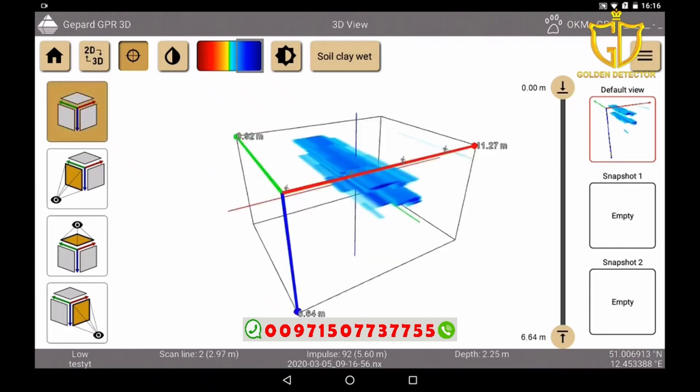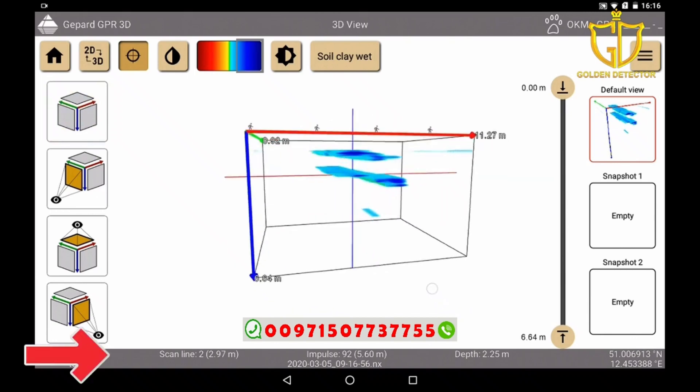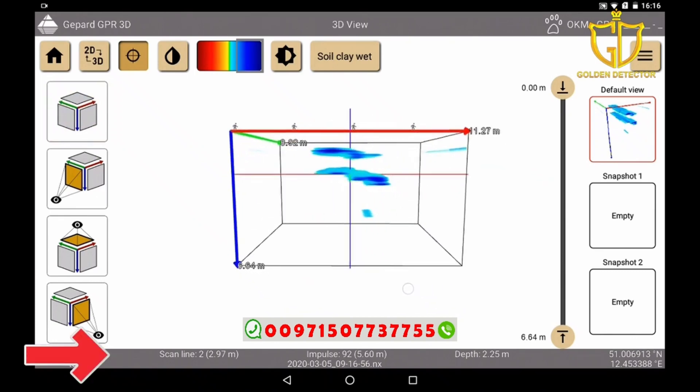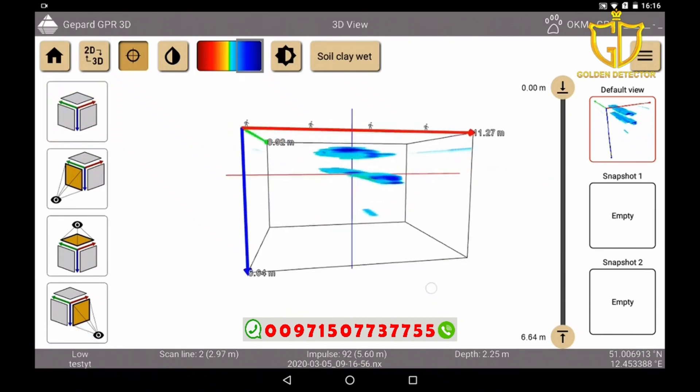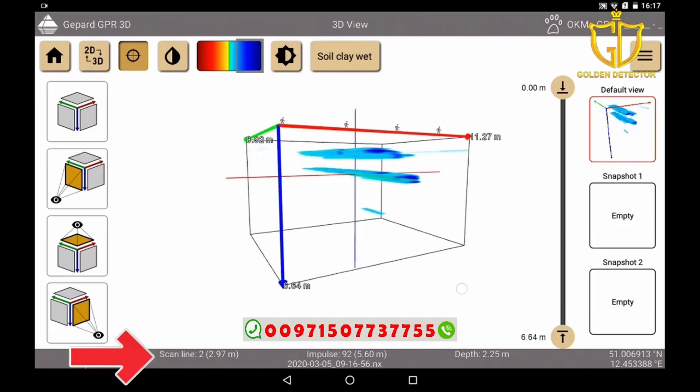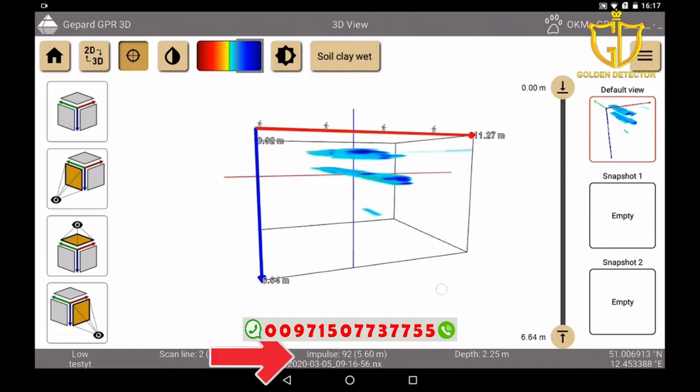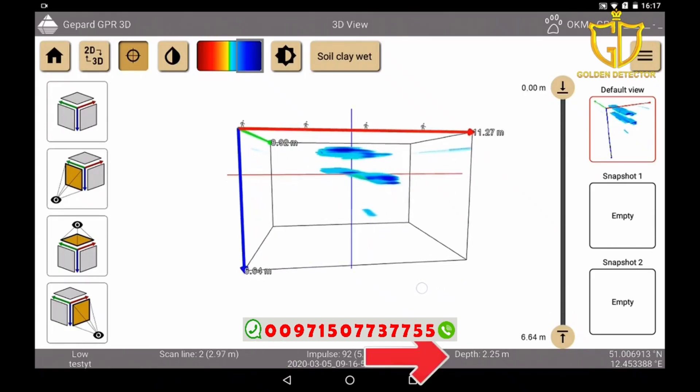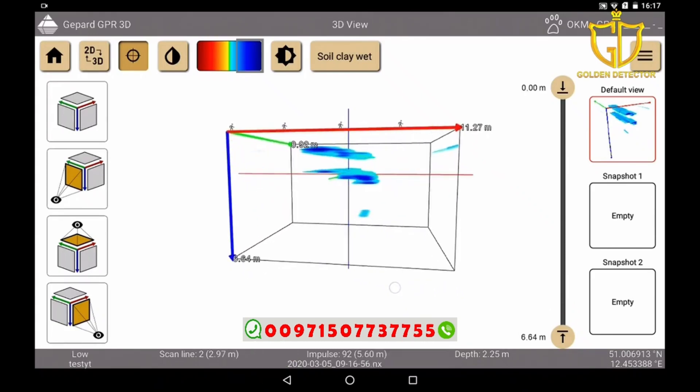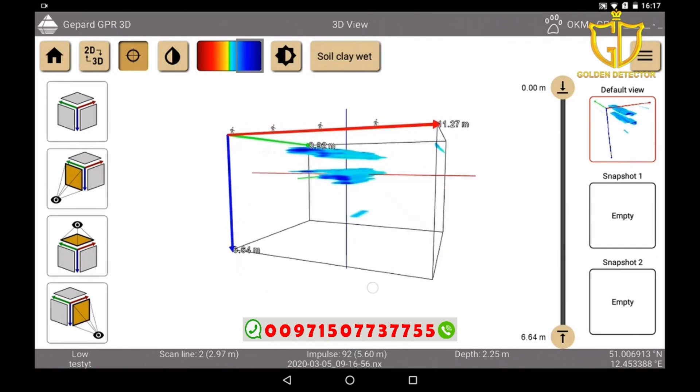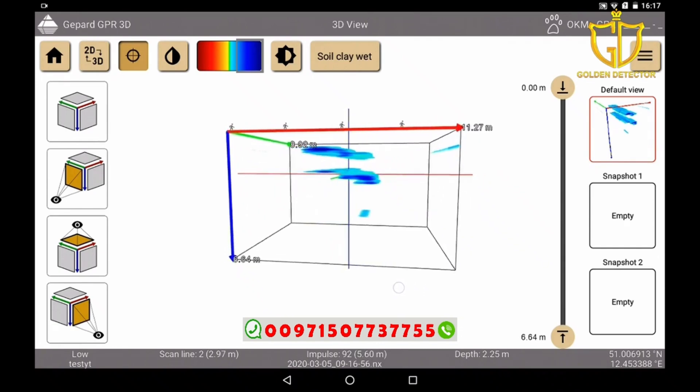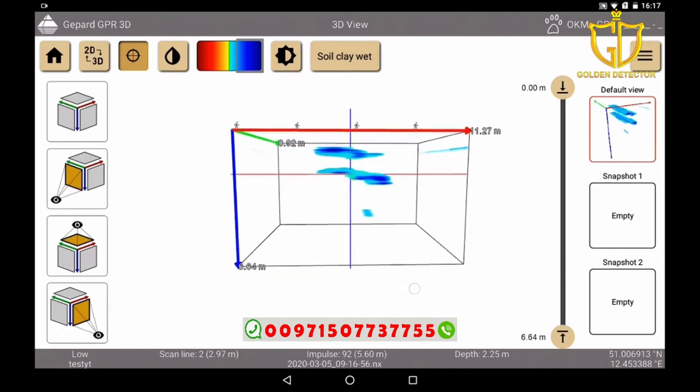Now we can look into the grey status bar at the bottom of the screen to see where our object is exactly located. We can see in which measurement lane it is located, at how many impulses the objects become visible, and in which depth the object is approximately located. Remember, the more exactly we have selected our soil type, the more exact is the determination of the depth.